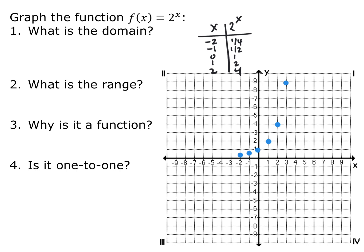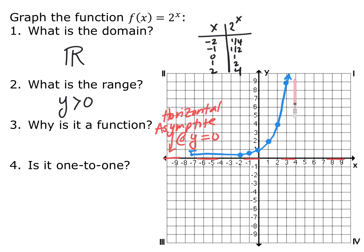Thinking about the domain — we plugged in negative numbers, 0, and could plug in fractions as well — so the domain of any exponential function without context is always all real numbers. For the range, since we're multiplying 2 by itself any number of times, we'll never get a negative number or 0. So the range is y is greater than 0. Because we can never equal or go below 0, there's a horizontal asymptote at y equals 0. This is a function — it passes the vertical line test — and it is one-to-one since it passes the horizontal line test.